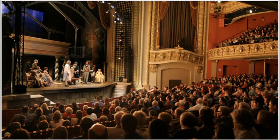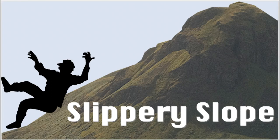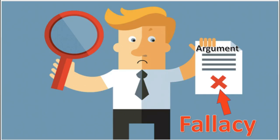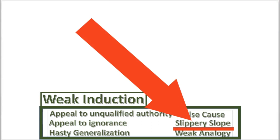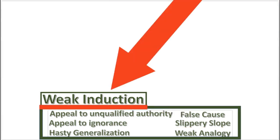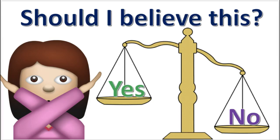Ladies and gentlemen, welcome to this episode of Logic. The Slippery Slope Fallacy is the topic of this video. A fallacy is an error or defect in an argument. These 22 informal fallacies are covered on this channel. The Slippery Slope Fallacy is a fallacy of weak induction. Weak induction means not enough support from the premises to believe the conclusion.